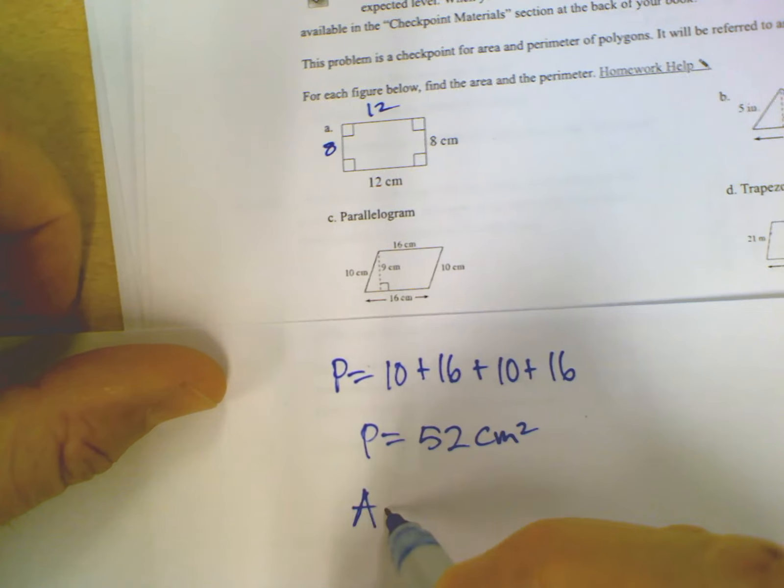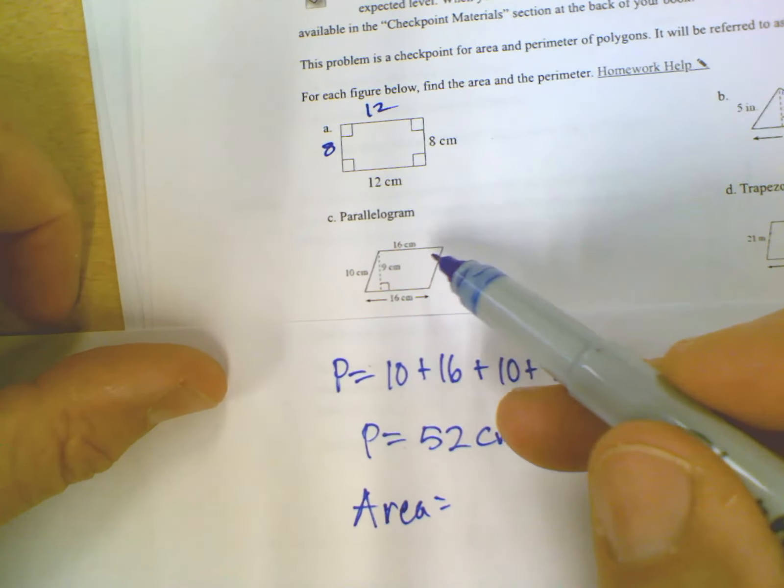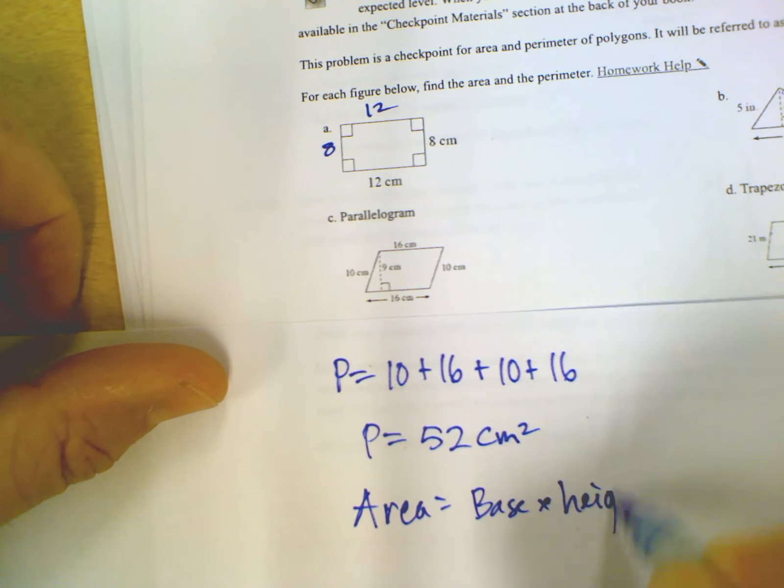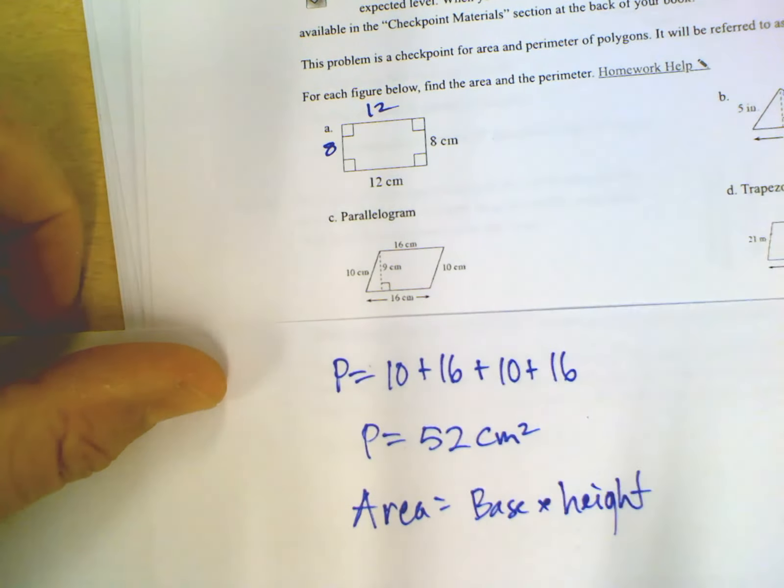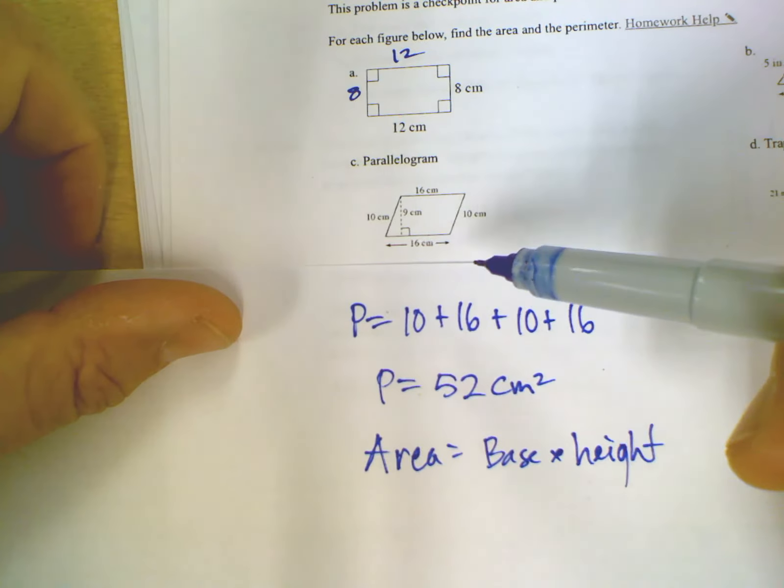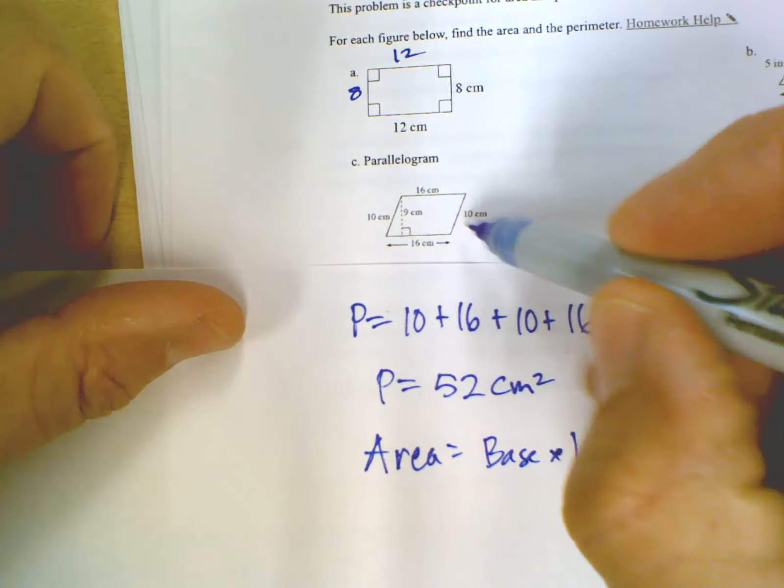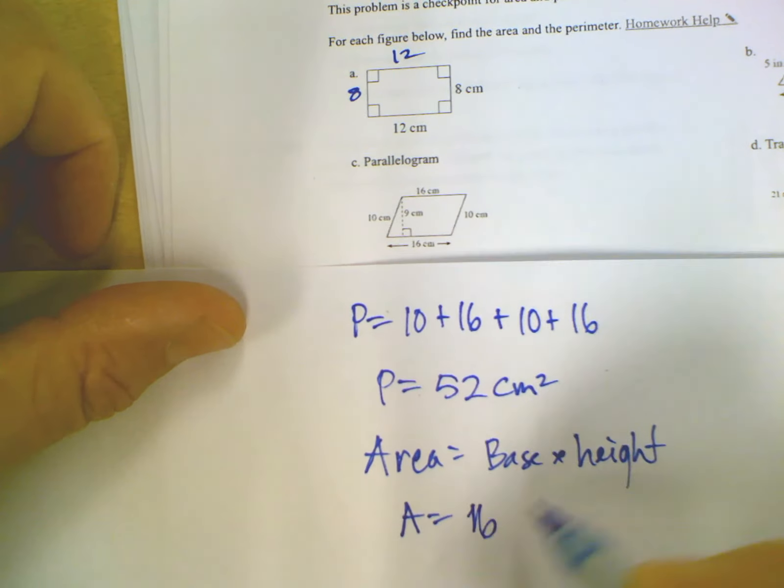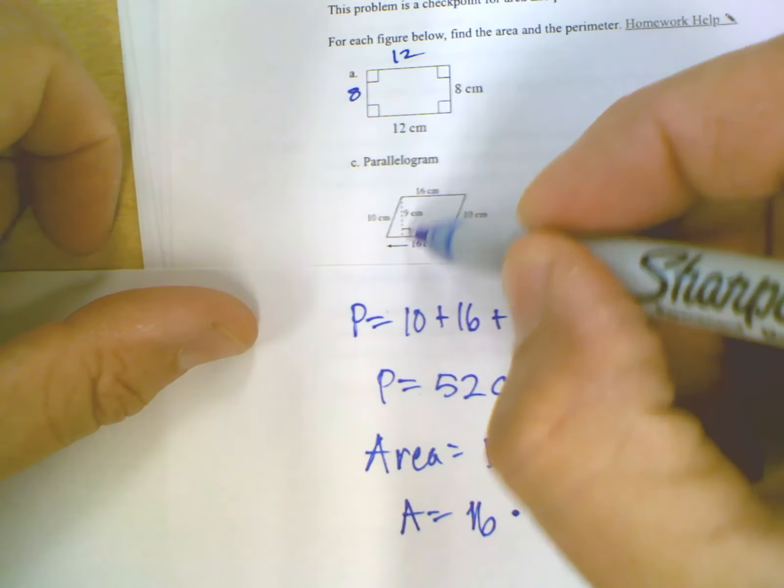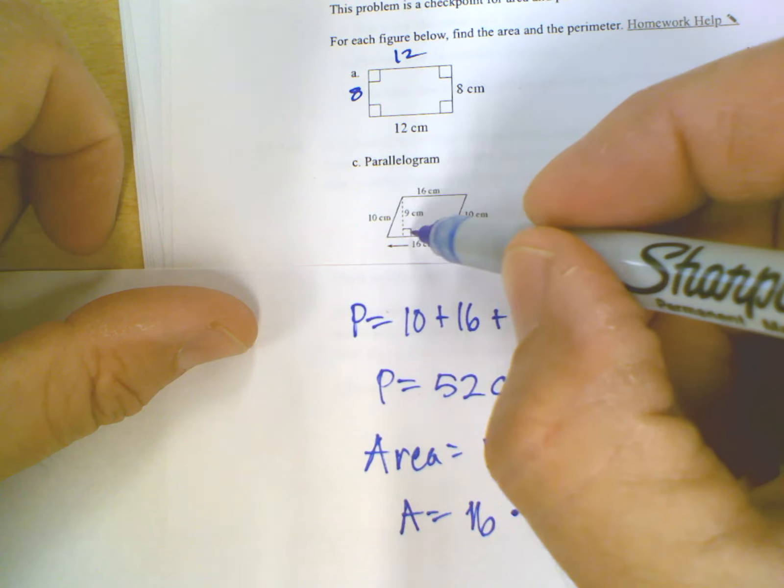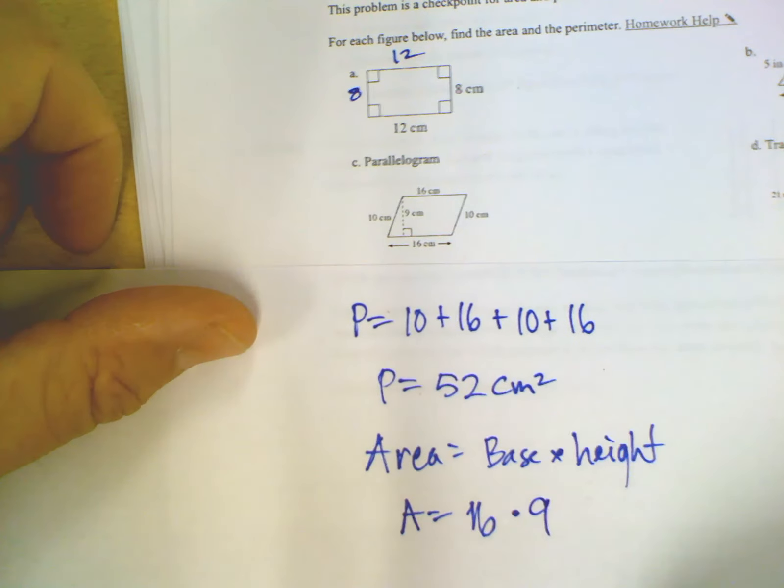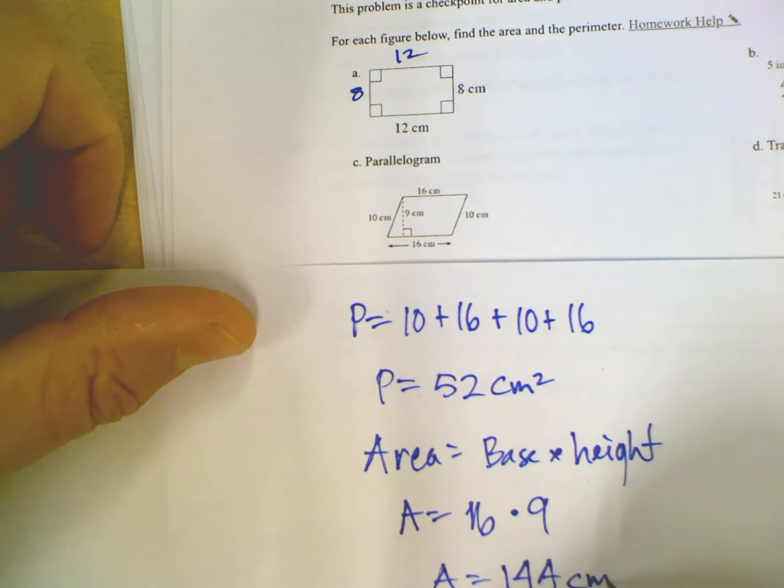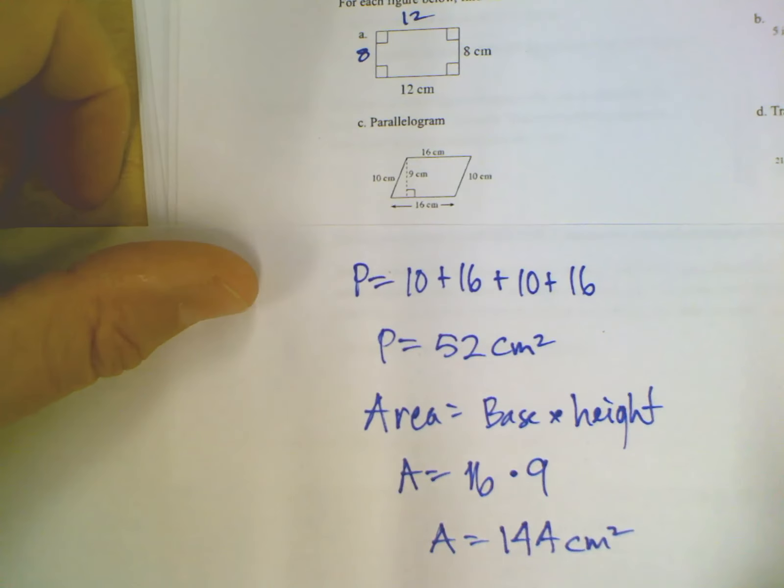Area. To find the area of a parallelogram, it is base times height. Area of a parallelogram, base times height. Again, base and height, just like we talked about with a triangle, has to be connected by a 90 degree angle. And there it is, 90 degrees right there. So my base would be the 16, and it's connected to the height that is the little dash line inside that has that little 90 degree symbol. So it's 16 times 9. So area is 144, and again, units squared. So we put centimeters squared because the units are centimeters.